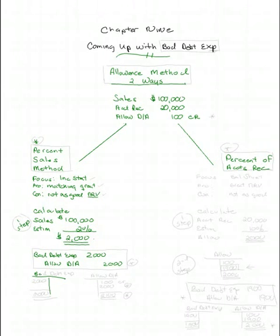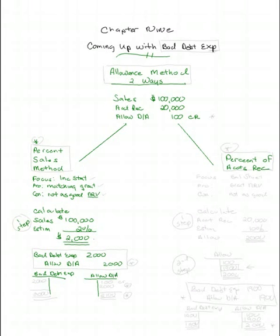Bad debt expense is affected. Bad debt is an expense account, so it has a zero balance each period. The allowance for doubtful accounts, in our example, has a $100 credit balance. You need to watch this because the allowance account will have a small balance at the end of the period, and it could be debit or credit.